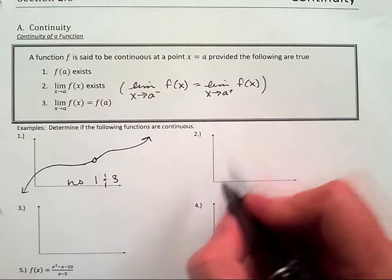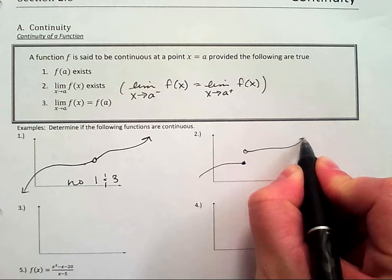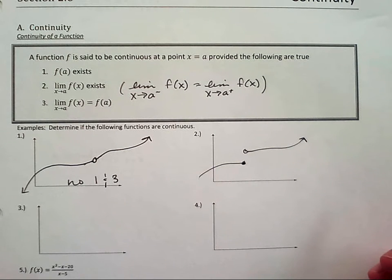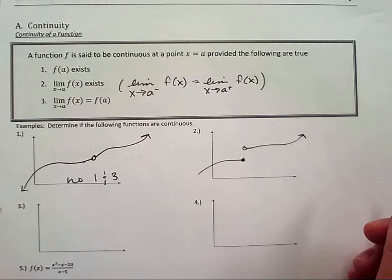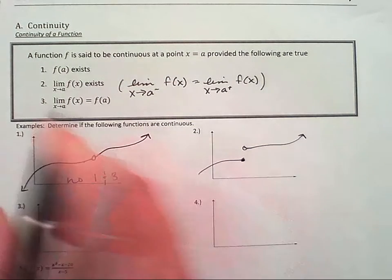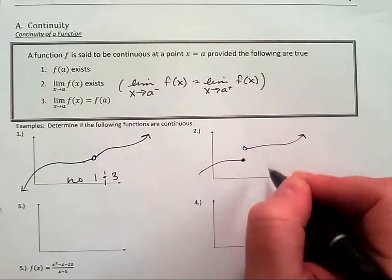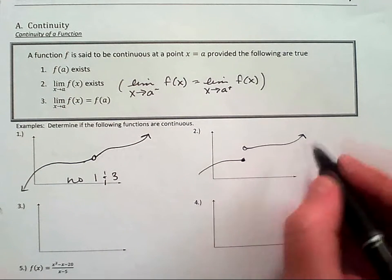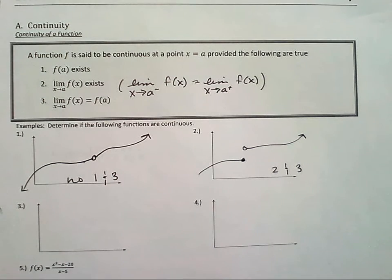Okay, let's draw another one. Is this function continuous? No, what does it fail? Number one, this exists. Every x value exists. Number two and three. Because the limit from the left does not equal the limit from the right.